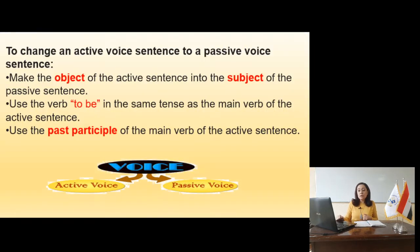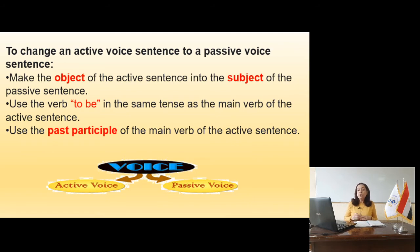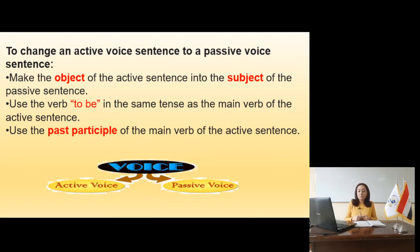Moving to slide 5 — to change an active voice sentence to a passive voice sentence, we follow some steps. Number one: make the object of the active sentence into the subject of the passive sentence. Number two: use the verb 'to be' in the same tense as the main verb of the active sentence. Number three: use the past participle of the main verb of the active sentence.